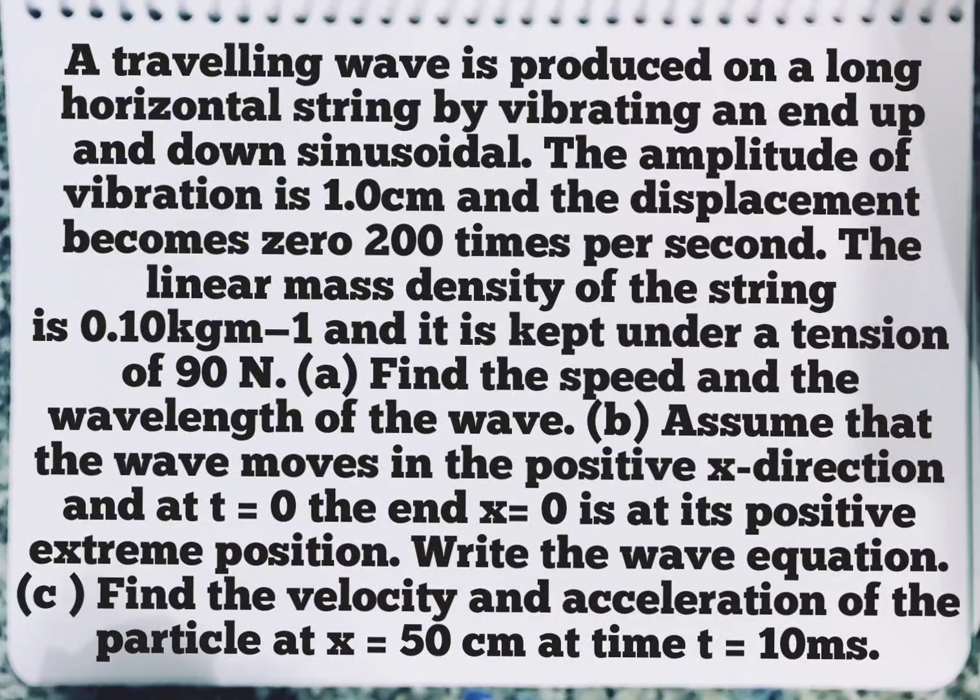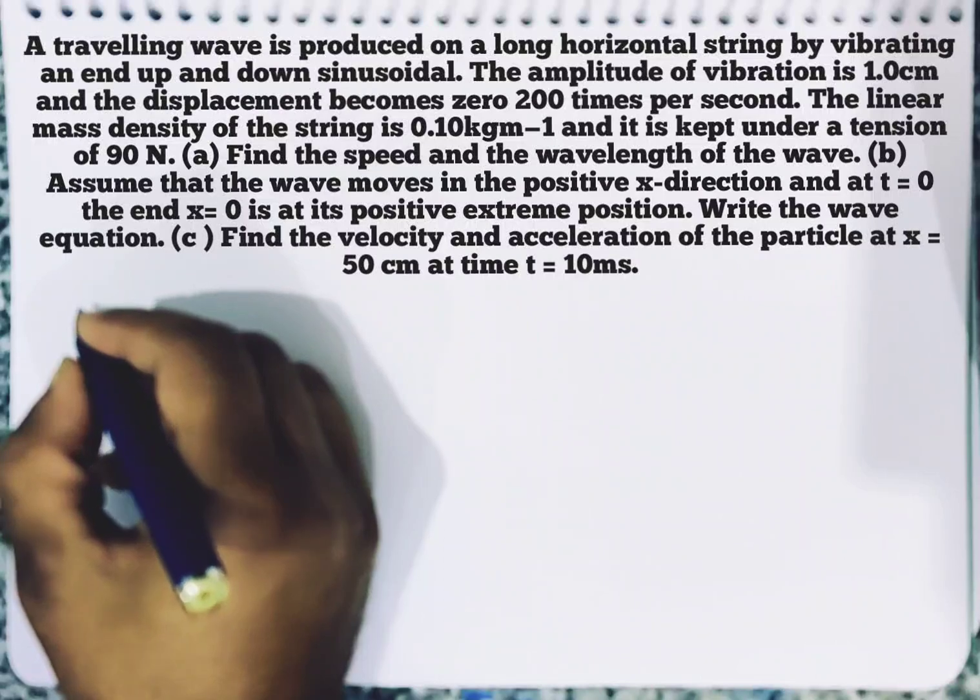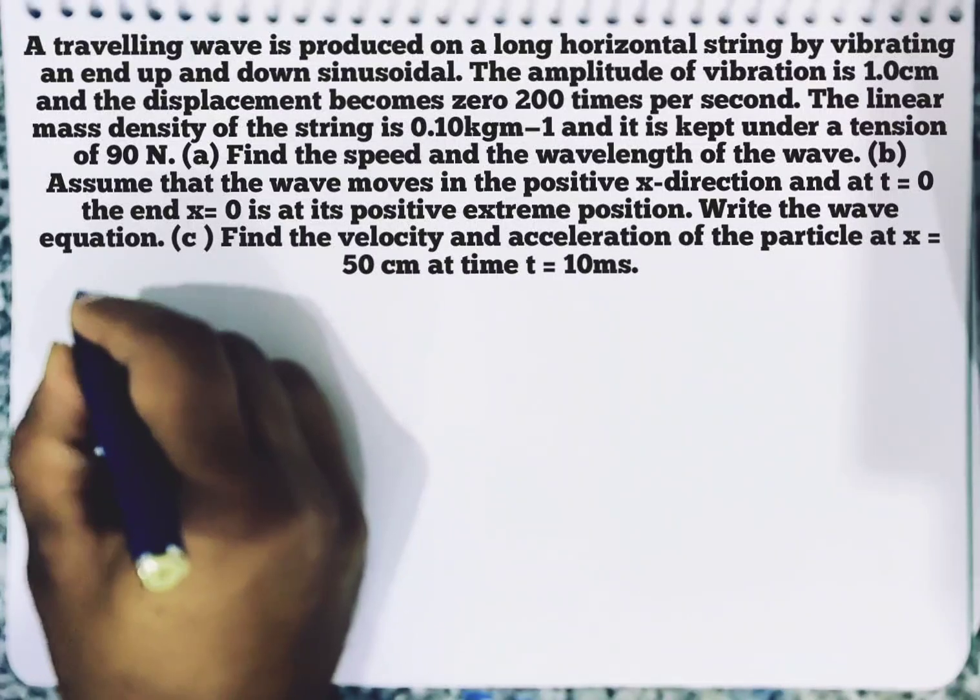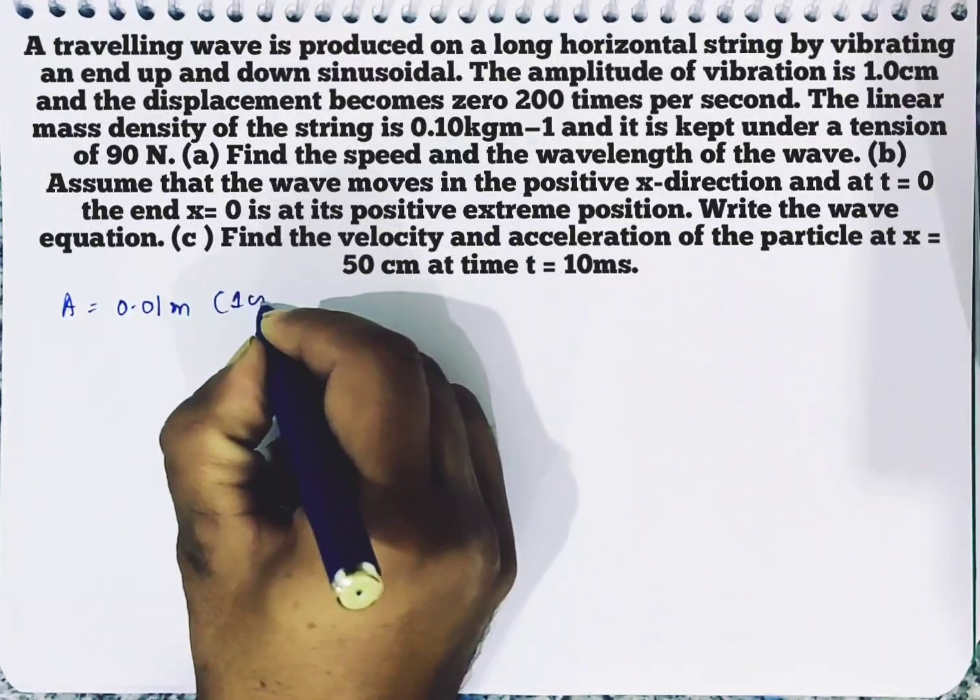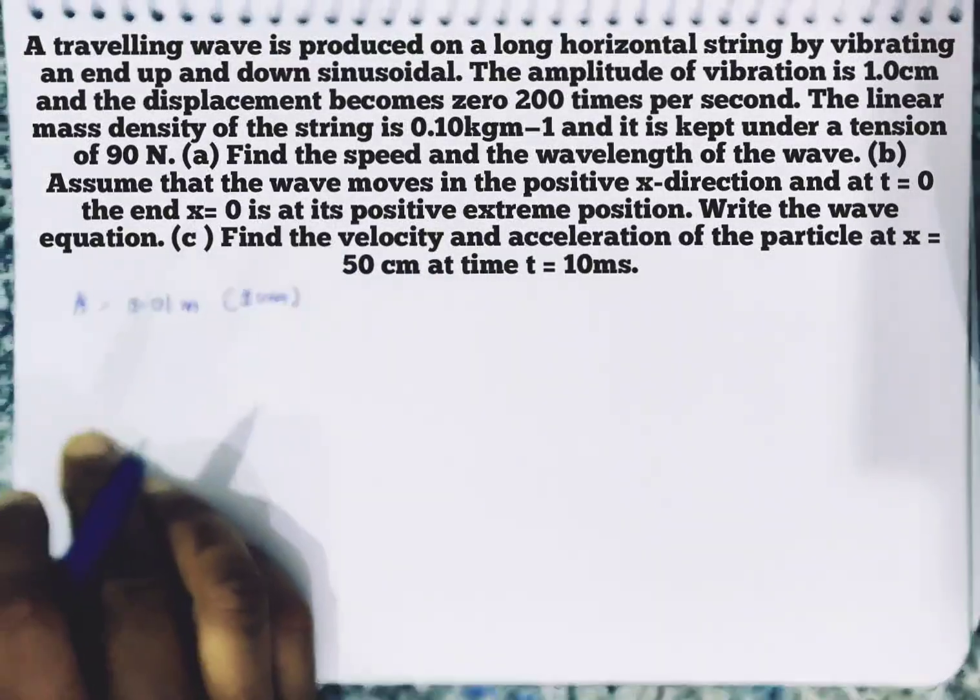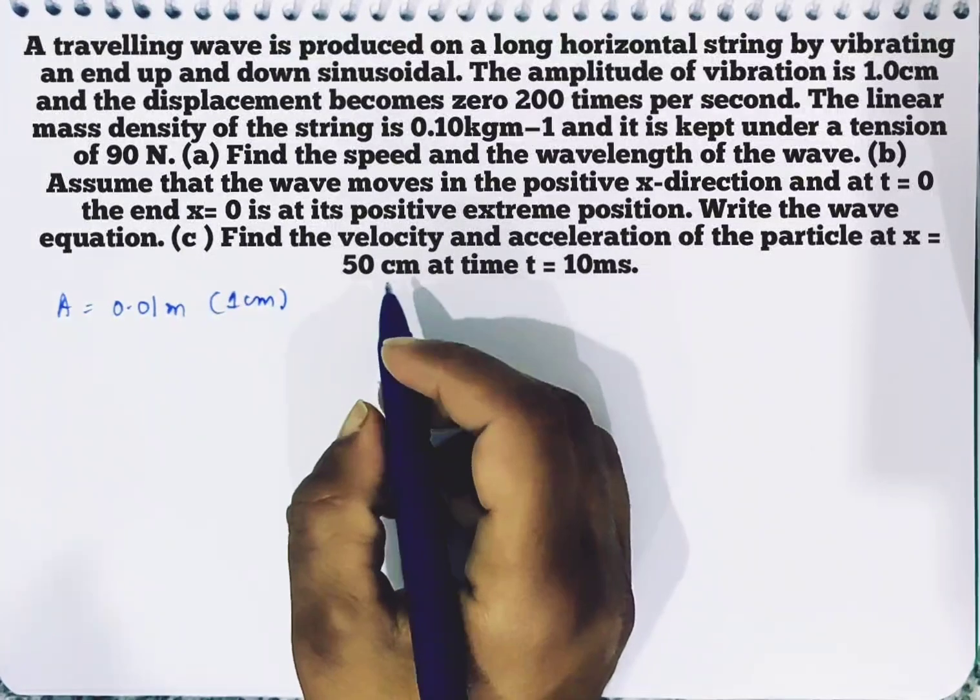Third part, find the velocity and acceleration of the particle at x equal to 50 cm at time t equal to 10 ms. So, let's write the given data. We have the amplitude is 0.01 m, actually it is 1 cm. So I am going to write in SI units also.